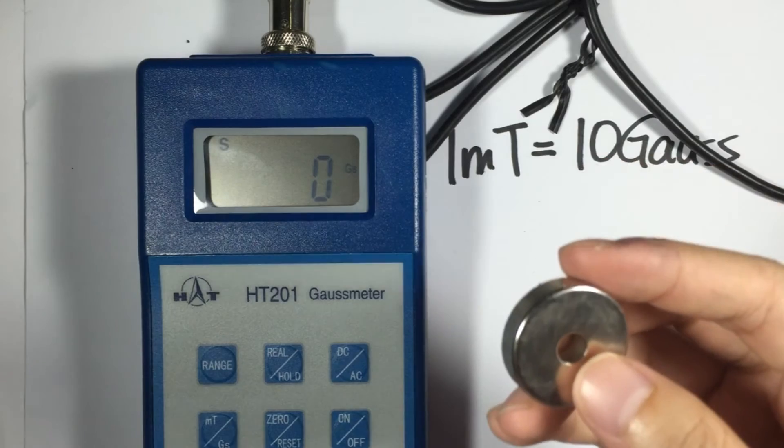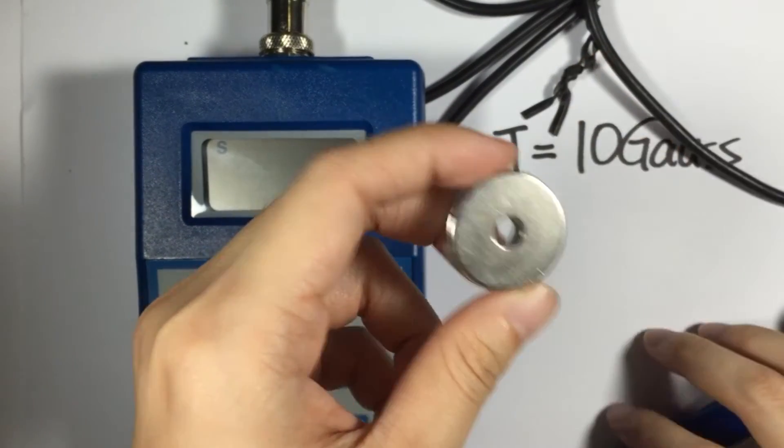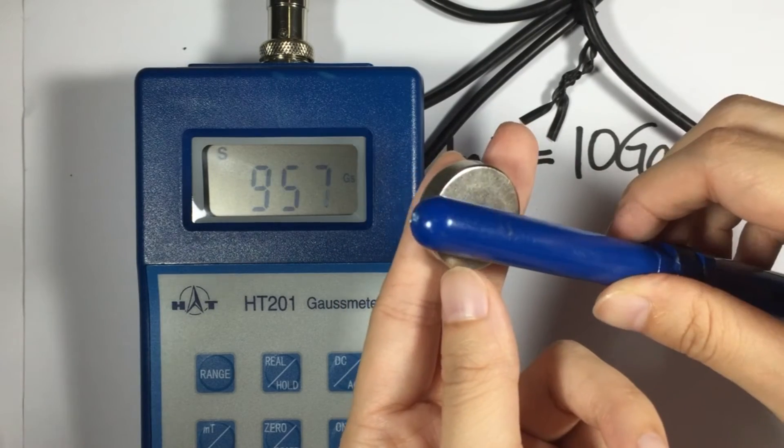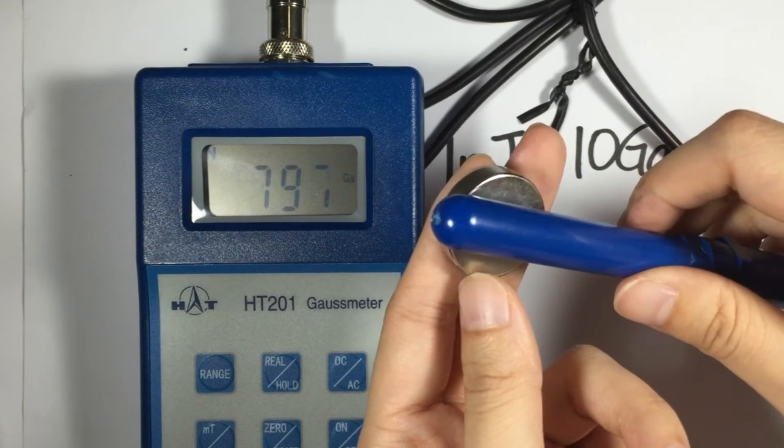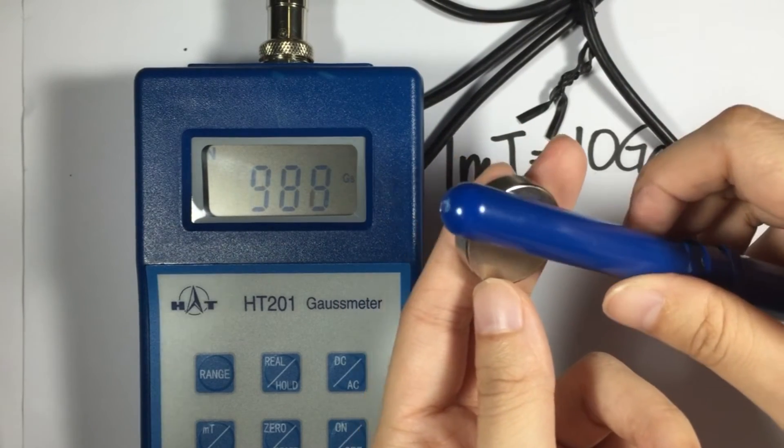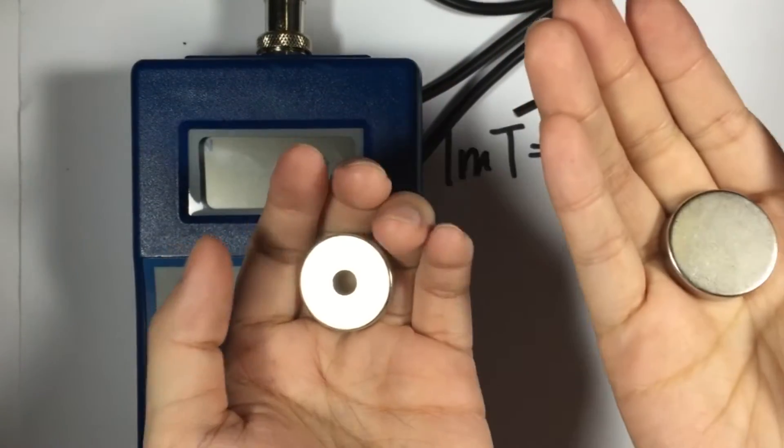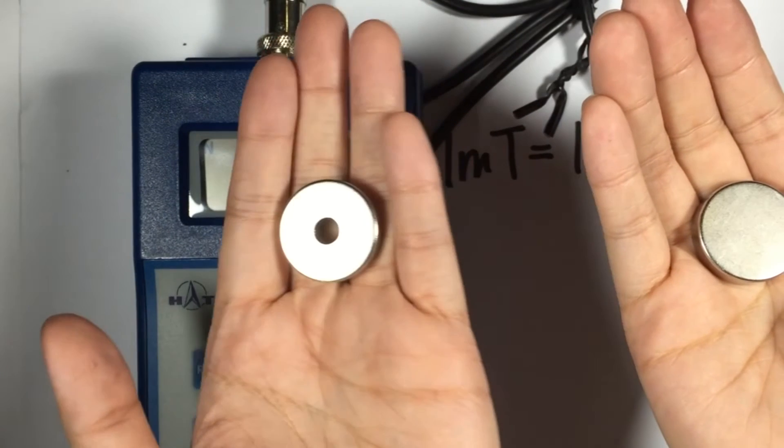Let's take out the disc with the exact diameter and thickness. It seems like the highest that I can get is only 1,000. That's because it has a hole. This one is 1,400 and this one is 1,000 something.